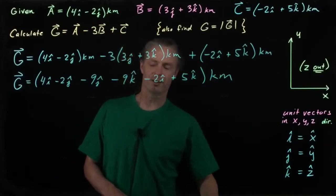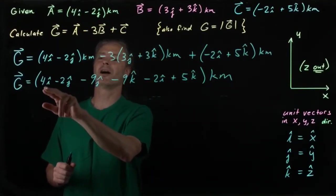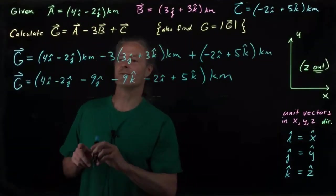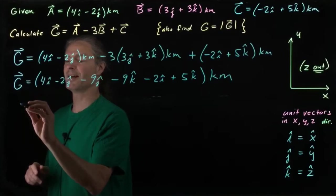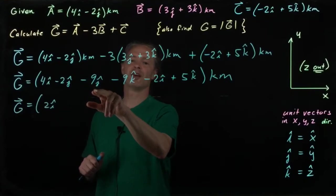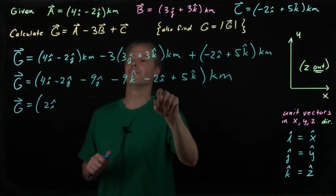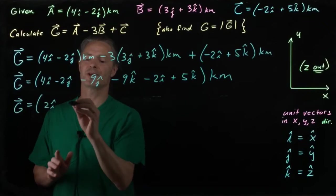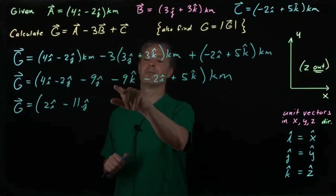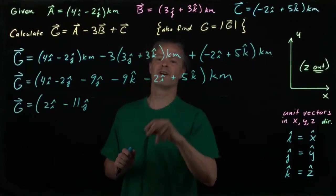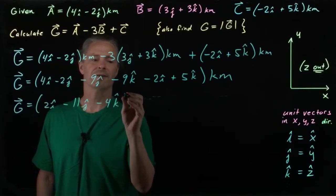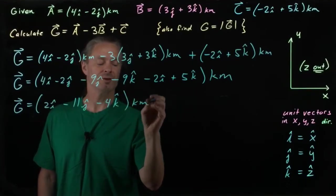All right, so what I can do now is combine the like terms. So I've got 4i-hat here and a negative 2i-hat here, so that gives me a positive 2i-hat. I've got negative 9j-hat here, and negative 2j-hat here. Together those give me minus 11j-hat. And finally, I've got minus 9k-hat plus 5k-hat. That gives me negative 4k-hat. And I still have my kilometers riding along.